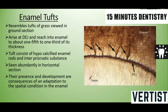Next is enamel tufts. In the ground section, these resemble tufts of grass arising from the dentino-enamel junction. They reach into the enamel about one-fifth to one-third of its thickness. They consist of hypocalcified enamel rods and interprismatic substance, and they are abundantly seen in horizontal section. The development of enamel tufts is a consequence of adaptation to the spatial conditions in the enamel.